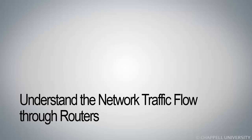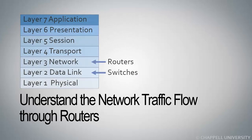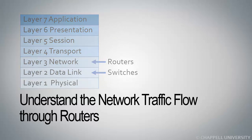Routers are Layer 3 devices, and they are typically much more complex than switches, which are Layer 2 devices. When we talk about Layer 2 and Layer 3, we're talking about the layers of the OSI model. Layer 2 is the data link layer, forwarding based on the MAC address. Layer 3 is the network layer. Routers are Layer 3 devices because they forward based on network layer information, such as the IPv4 or IPv6 address.